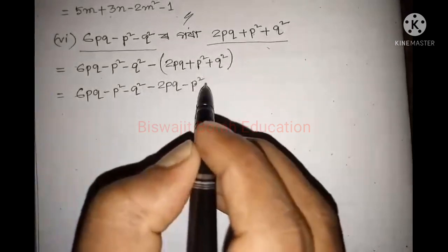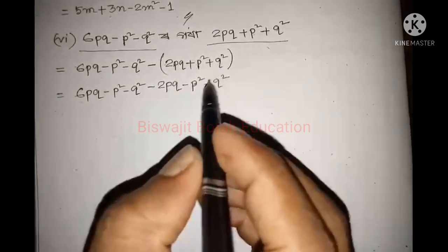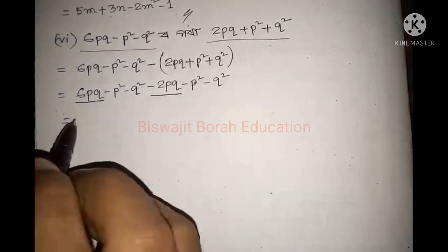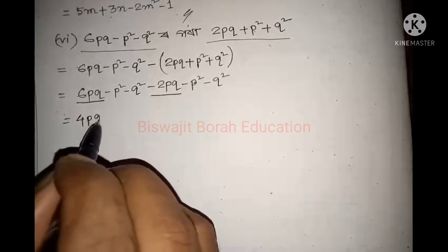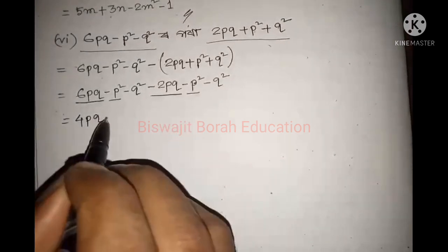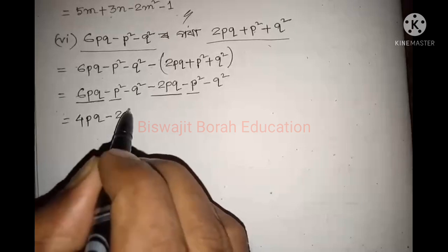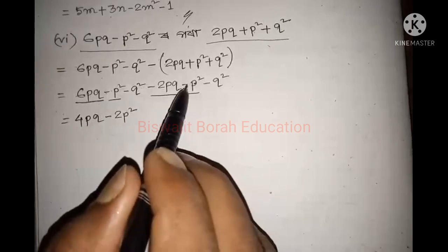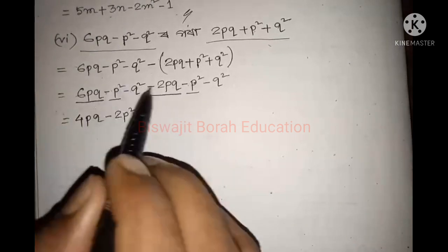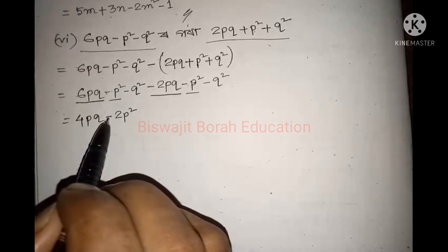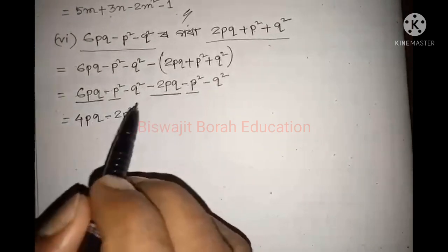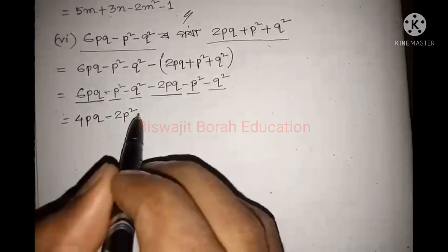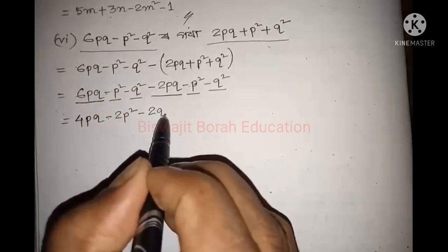Minus a plus minus q squared. This is 6pq and this is minus 2pq. So equal to 4pq. This is minus p squared, minus p squared, and the backward speed. This minus p squared is a 1. Now we have 2p squared and we put 2p squared into the expression.